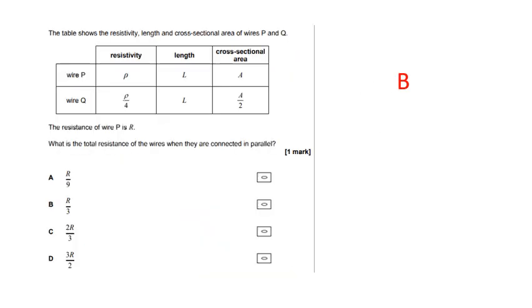This one here, table shows the resistivity length, two wires, P and Q. There's wire P, rho L, A. There's wire Q, and its resistivity is different. Length is the same. Area is different. What is the total resistance of the wires when they are connected in parallel? Two bits to this question. The first thing we need to do is work out an expression for Q. What's the resistance of wire Q? And then we'll worry about putting them in parallel.